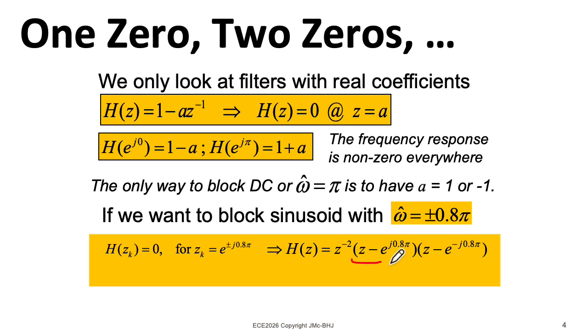So here I have one zero at e^(j0.8π), and here I have a zero at e^(-j0.8π). Notice in setting up this structure, I'm putting a couple of poles at the origin.